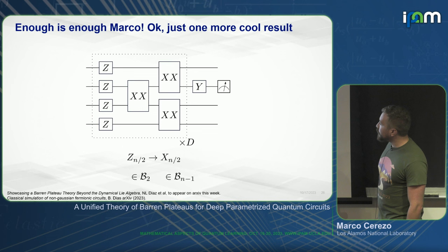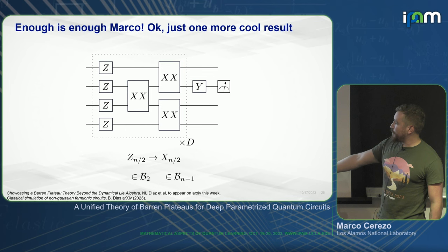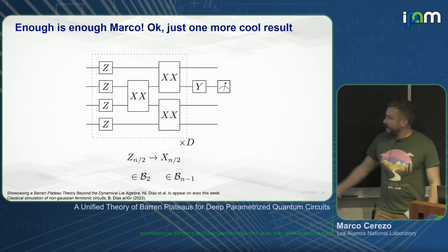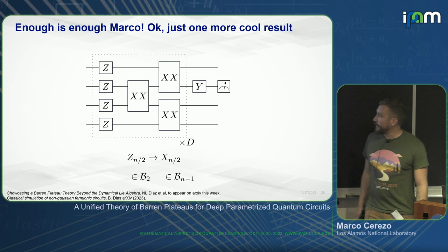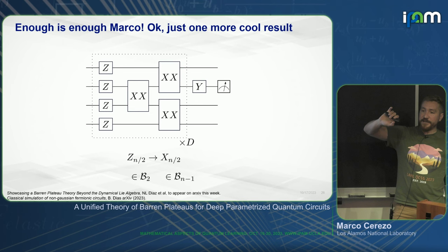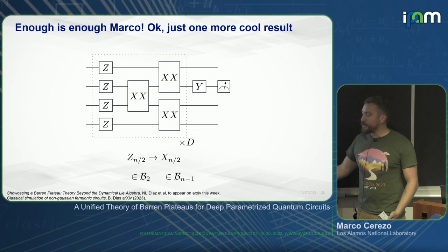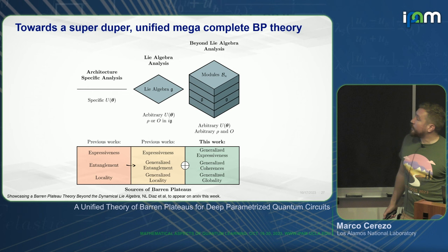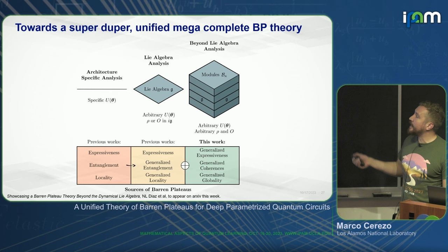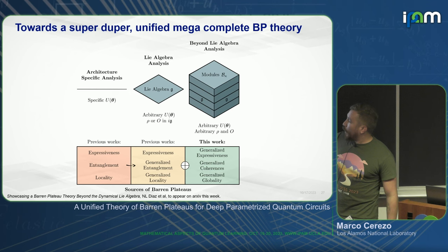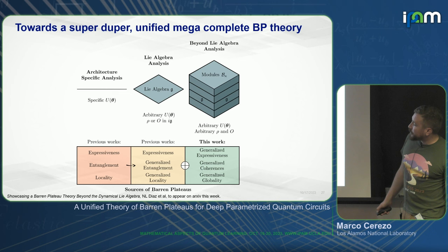A striking example: take a matchgate circuit measuring a Z-basis operator in the algebra from a Gaussian state — super trainable. Now measure X_j, which belongs to an exponentially large module — severe Barren Plateau. These two observables are related by a single Y-rotation. So adding a single gate at the end of the circuit transforms a completely trainable circuit into a completely untrainable one. This highlights how algebraic properties, not standard intuitions about locality or entanglement, govern trainability.